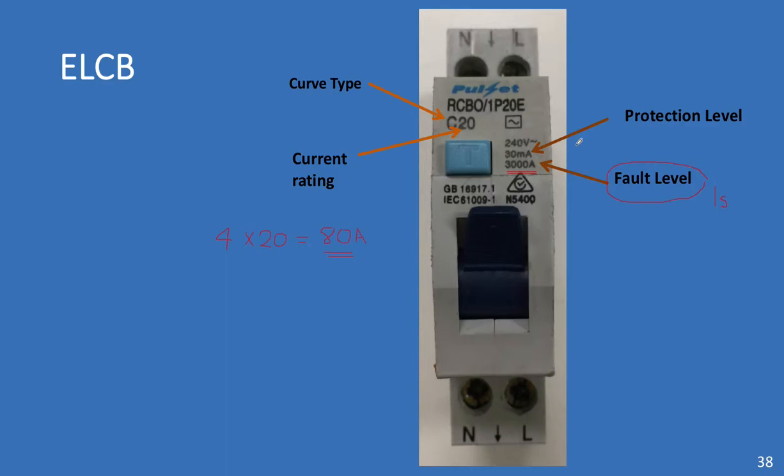As I mentioned before, the 30 milliamps is the protection level that the Earth leakage circuit breaker is at. So, if we have any leakage current here between line and neutral of more than 30 milliamps, the circuit breaker will trip.